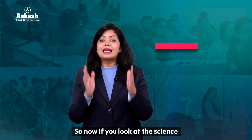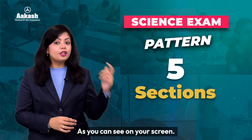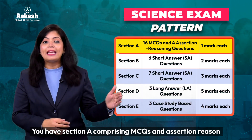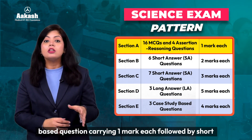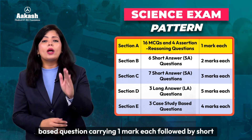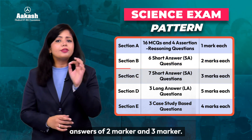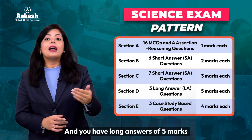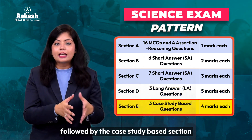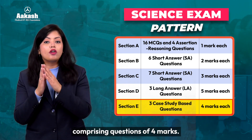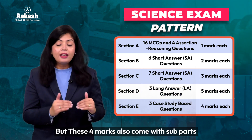So now if you look at the science exam, there are five sections in the paper. As you can see on your screen, you have section A comprising MCQs and assertion-reason based questions carrying one mark each, followed by short answers of two marks and three marks. And you have long answers of five marks, followed by the case study based section comprising questions of four marks. But these four marks will also be with sub-parts.